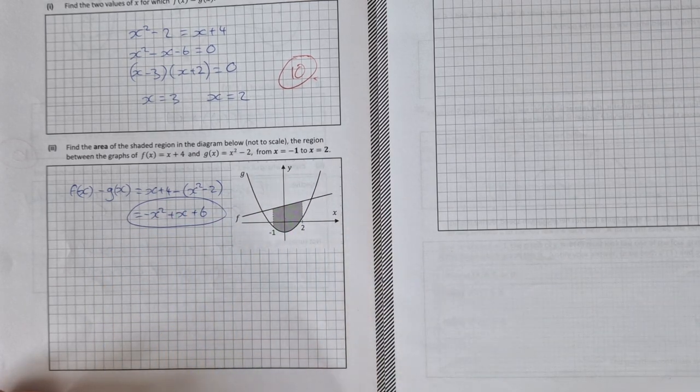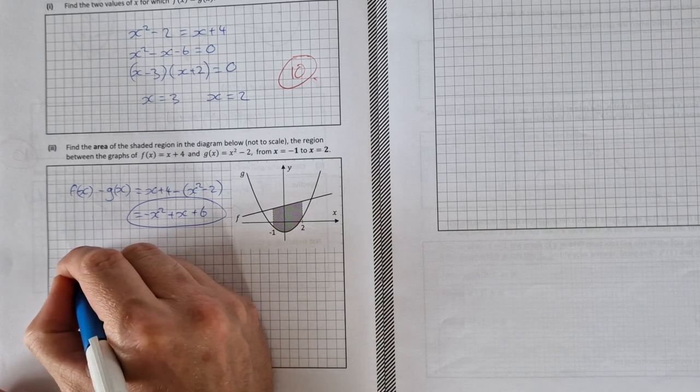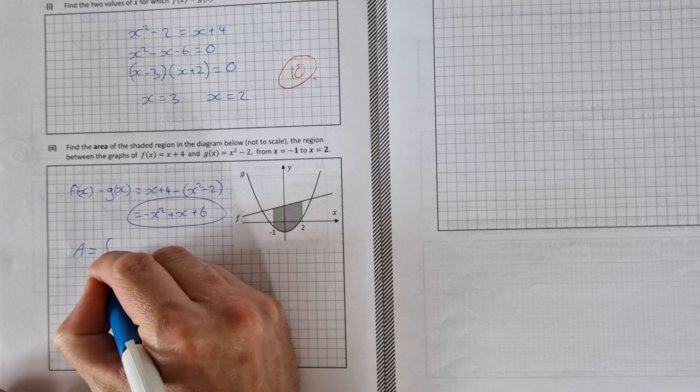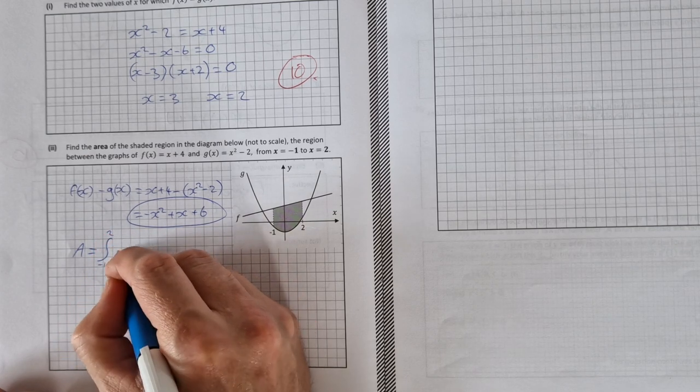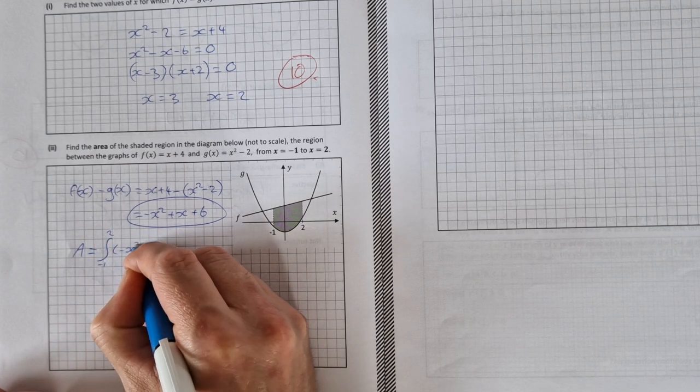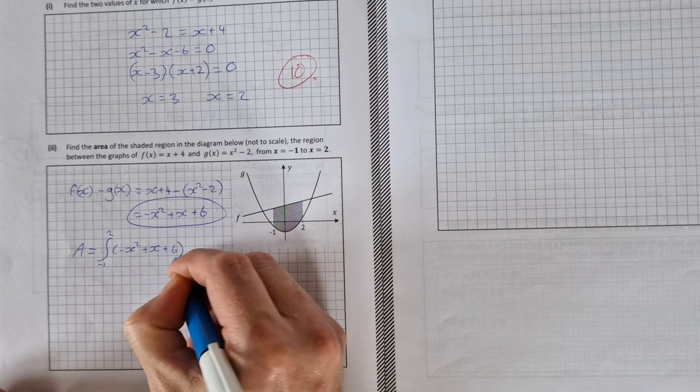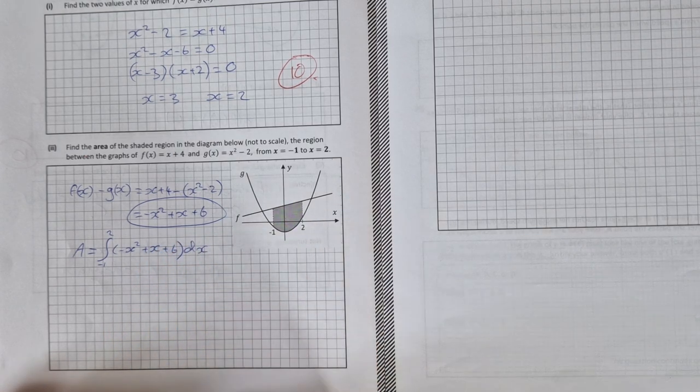This function now we can integrate between our limits -1 and 2, and that will give us the answer straight out. So the area is equal to the integral from -1 to 2 of (-x² + x + 6) dx.